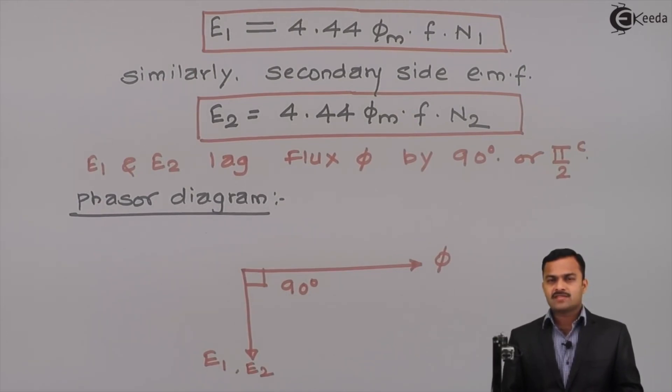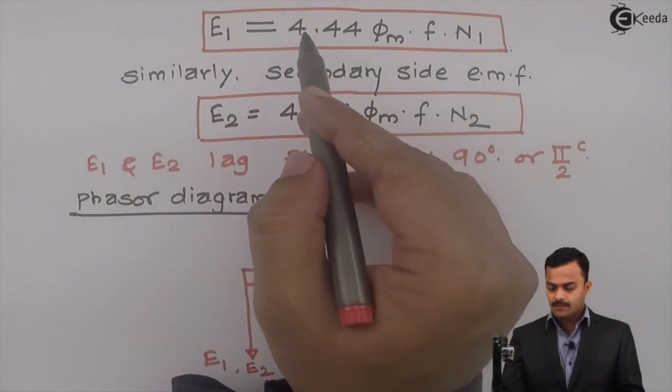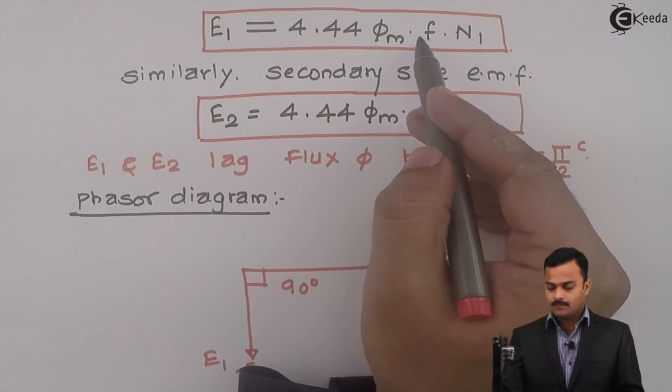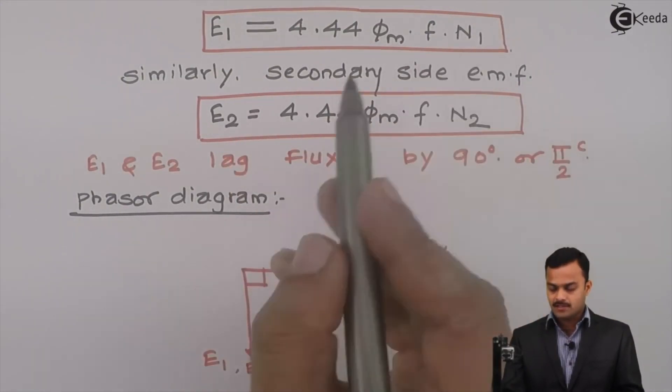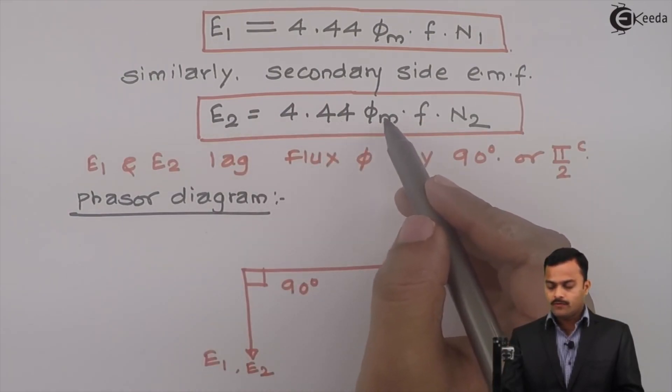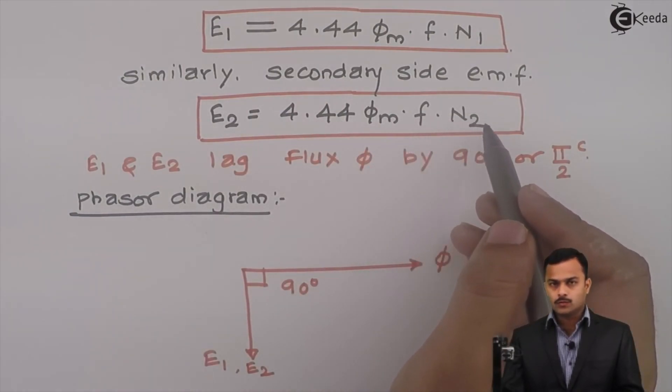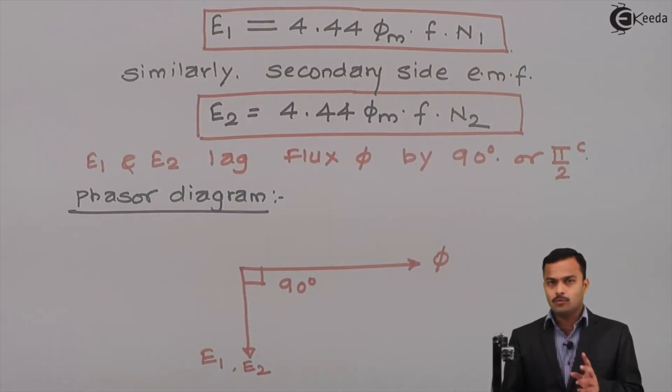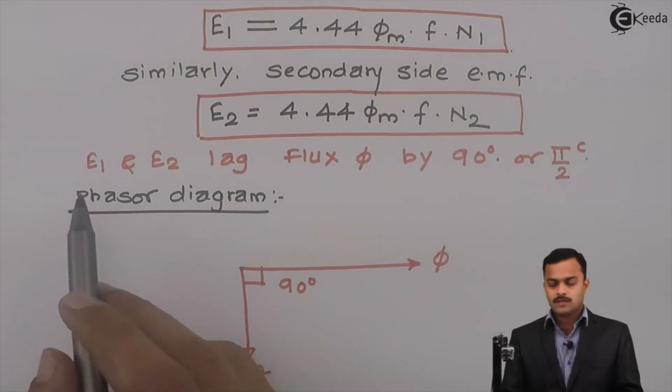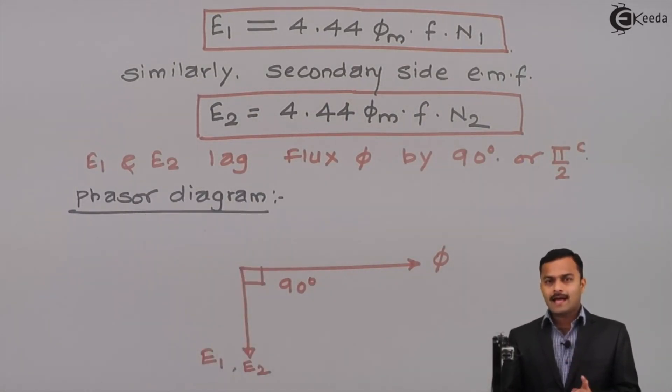Here we have seen EMF equation of a transformer. For primary side: 4.44 phi m F into N1, where N1 is the primary number of turns. E2: 4.44 phi m into F into N2, secondary number of turns. Frequency F will remain same on both sides. Moreover, this E1 and E2 lag behind flux phi by 90 degrees. Thank you.